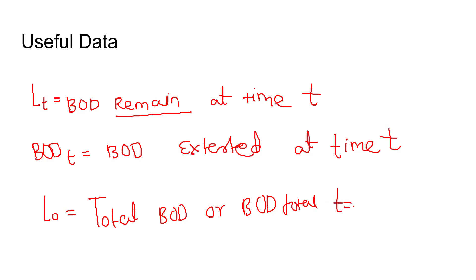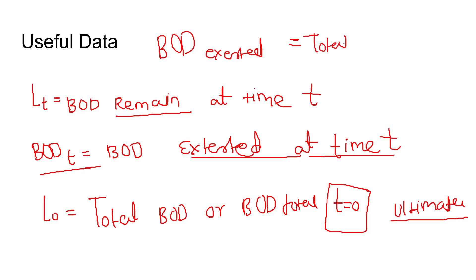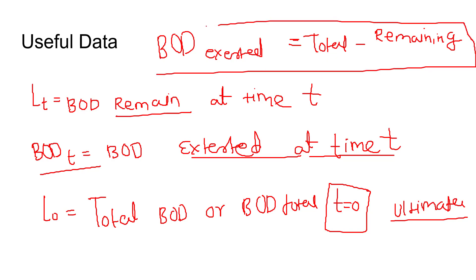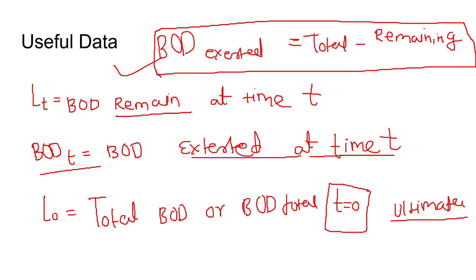L0 is the ultimate BOD at T equal to zero. BOD exerted at time T equals total BOD minus remaining BOD. This is the key relationship we use to evaluate the given expressions.